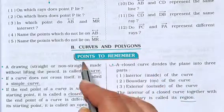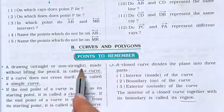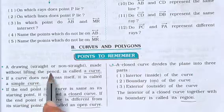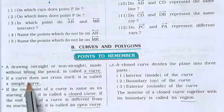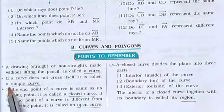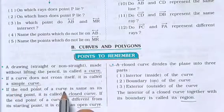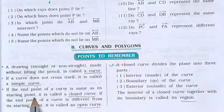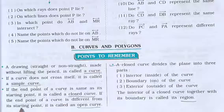Next: Curves and Polygons — points to remember. A drawing, straight or non-straight, made without lifting the pencil, is called a curve. If a curve does not cross itself, it is called a simple curve. If the end point of a curve is the same as its starting point, it is called a closed curve. If the end point is different from its starting point, it is called an open curve.